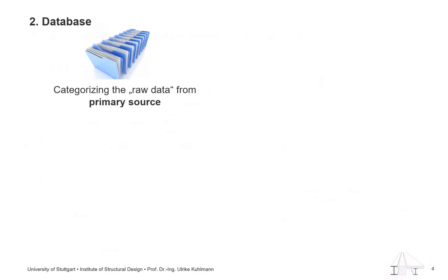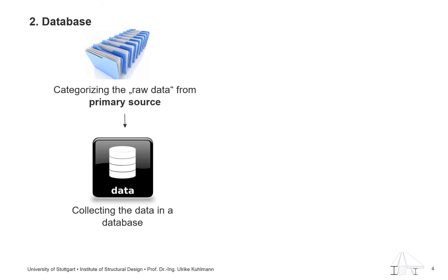Turning our attention now to the database. We collected papers from the last 100 years and extracted the fatigue test data for the database. We did not copy any existing database. From my point of view, this is really important, for example, to avoid duplications. The database enables inquiry of a selection of specific data — for example, show me the fatigue test data for all butt joints on high strength steel — and with this data you are able to make a statistical analysis.